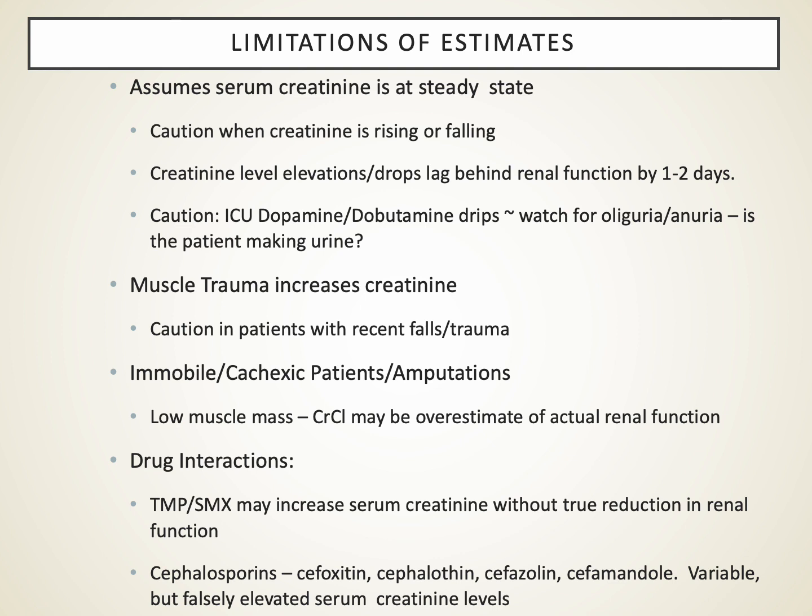If a patient has muscle trauma, that's a concern for elevated creatinine. If they're immobile, cachectic, or have had an amputation, all three mean they have less muscle mass. So whatever creatinine they have in their blood is coming from less muscle. If their creatinine is in the quote-unquote mid-range normal but their muscle mass is low, the only explanation is that their kidney function is, by default, not very good.